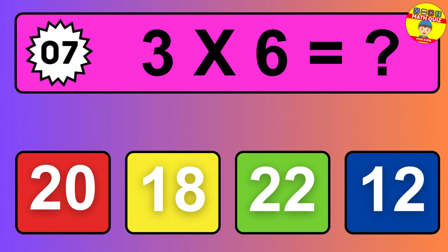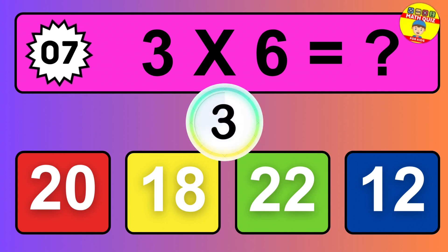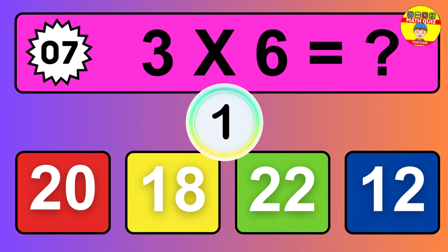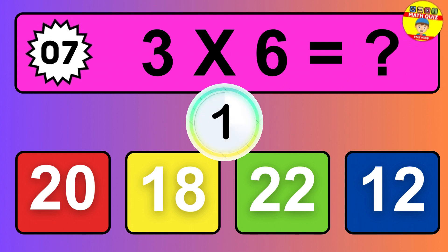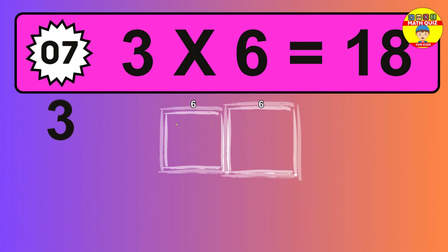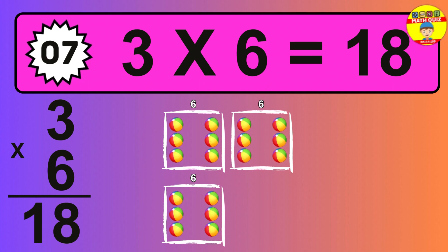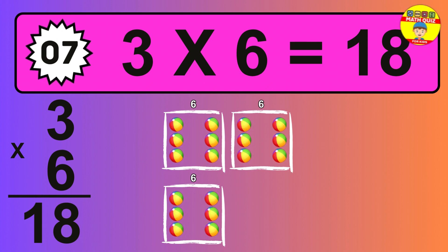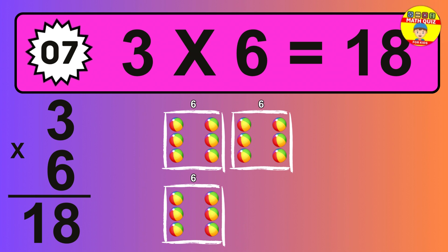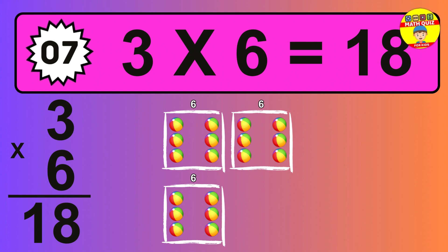Question seven. Three times six equals what? So the answer is three times six is 18. To calculate, we have three groups with six balls each one. So how many balls do we have? 18 balls.